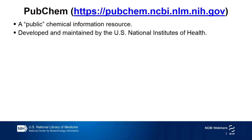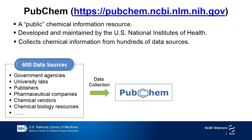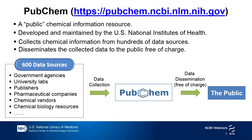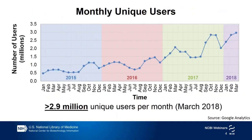So what is PubChem? PubChem is a public chemical information resource at NIH. Basically, what it does is collect chemical information from hundreds of data sources in the public domain and disseminate it back to the public free of charge. PubChem is a very popular chemistry website. For example, last March, we had more than 2.9 million unique users.